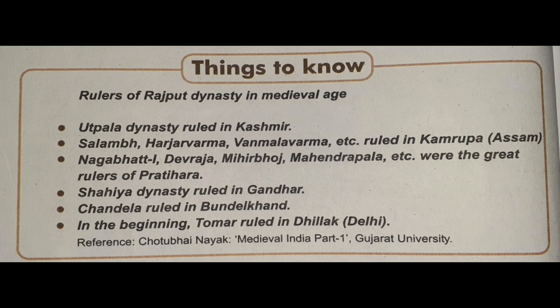Let us go through the things to know. Here you can see the rulers of Rajput dynasty in the medieval age, those who belong to North India. Uttpala dynasty ruled in Kashmir. Salam, Harjvarna, Vanmala Varna, etc. ruled in Kamarup, that is in Assam.